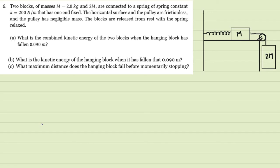So we have a spring here which has a spring constant k, k is 200 newton per meter, and the two masses are connected through a string. The first mass is on the horizontal plane, and the second mass is hanging with the help of the pulley, and the blocks are released from rest with the spring relaxed.